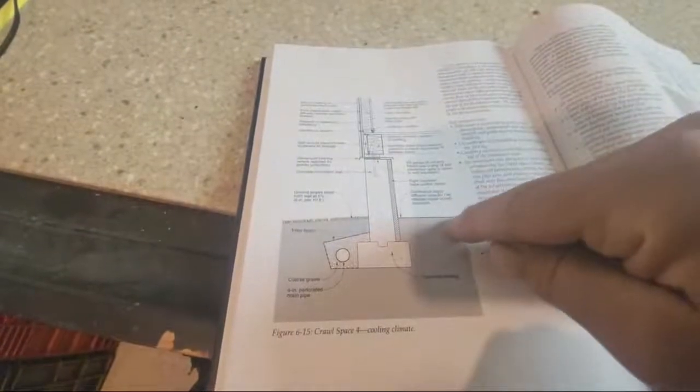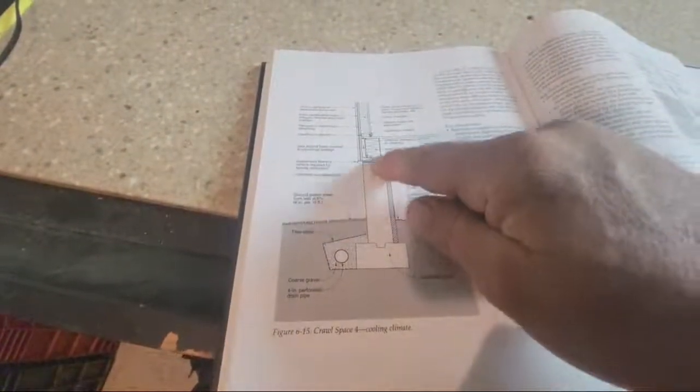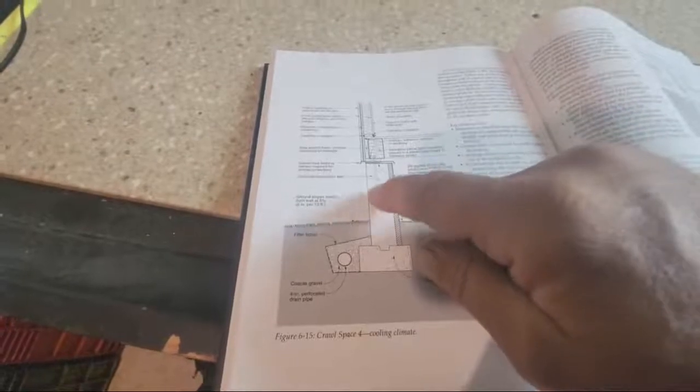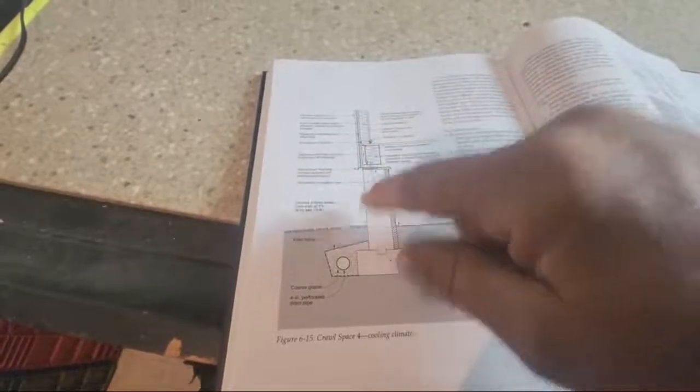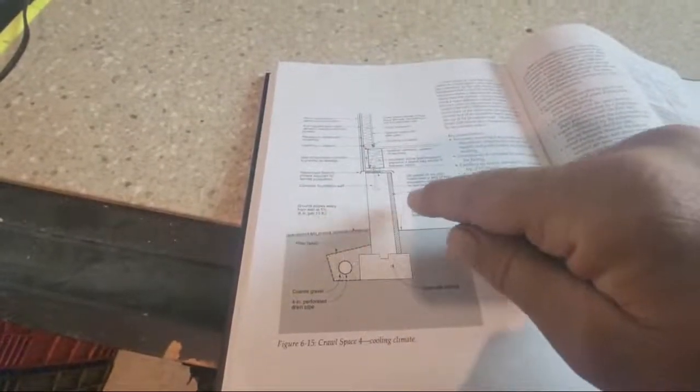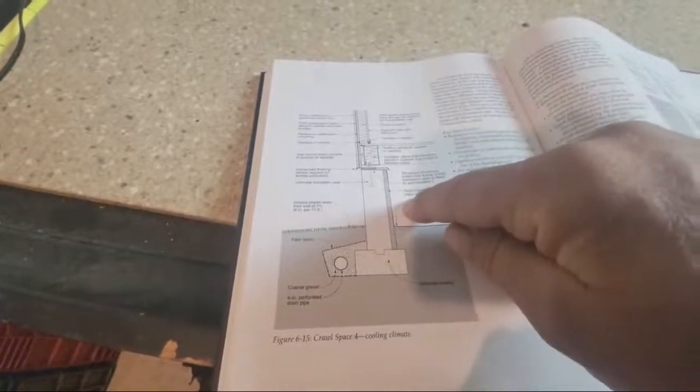This is perimeter insulation, and this has to be sealed 100%. You might want to run your vapor barrier up this wall and put the insulation. This foundation doesn't have to be concrete, it could be masonry, whatever. We're not worried about these details or these details.